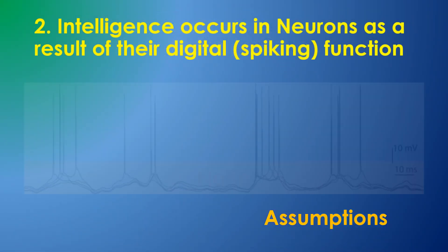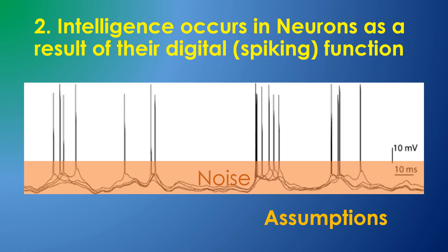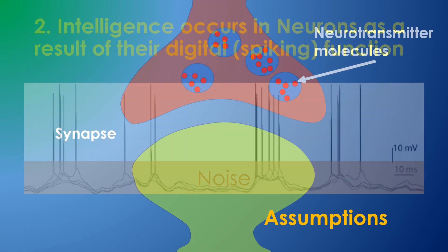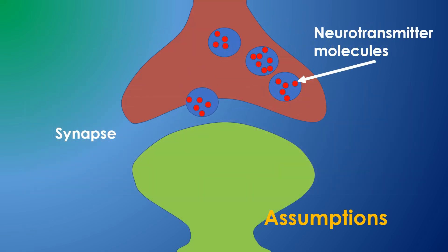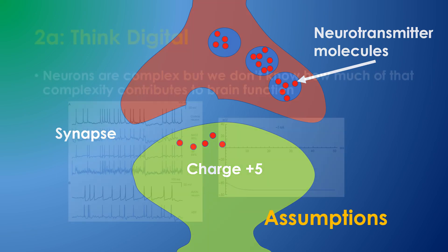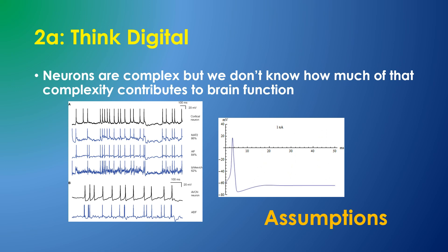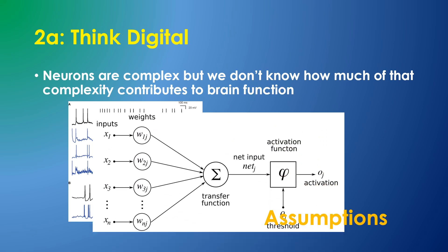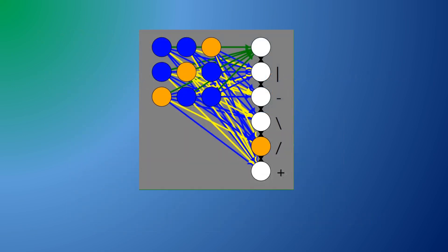Second, I assume that intelligence occurs in neurons and their digital function. While there is speculation that more is needed — like quantum effects, microtubules, or glial cells — I believe we should pursue the obvious digital neural synaptic functionality first, and only pursue these other avenues if the digital neuron model proves insufficient. Most of today's neuron models presume an analog neuron, perhaps with a value representing the firing rate. I assume that neurons only process information in terms of discrete neural spikes, which creates opportunities for interesting unexplored neural circuits with a drastically reduced computational load.